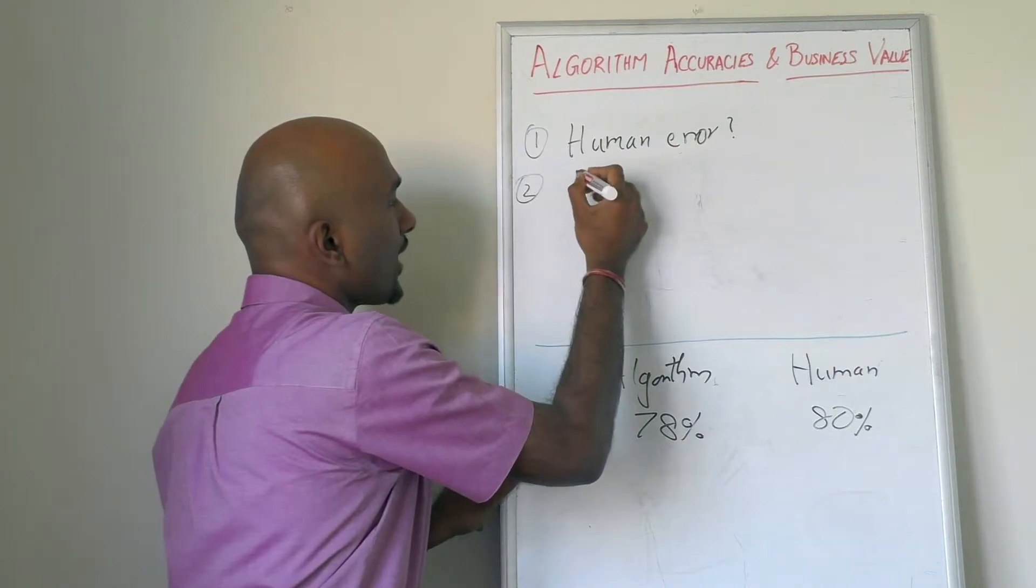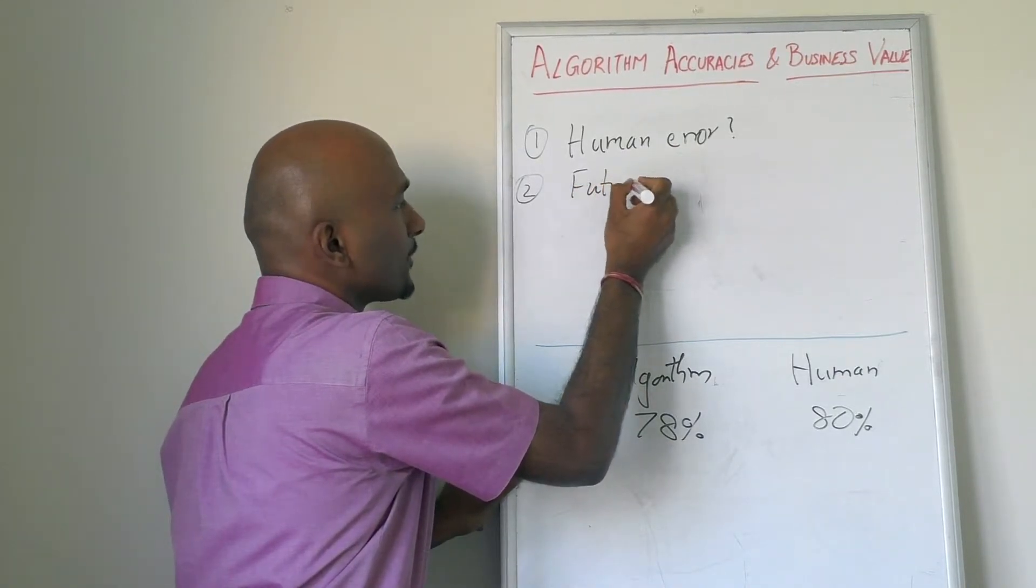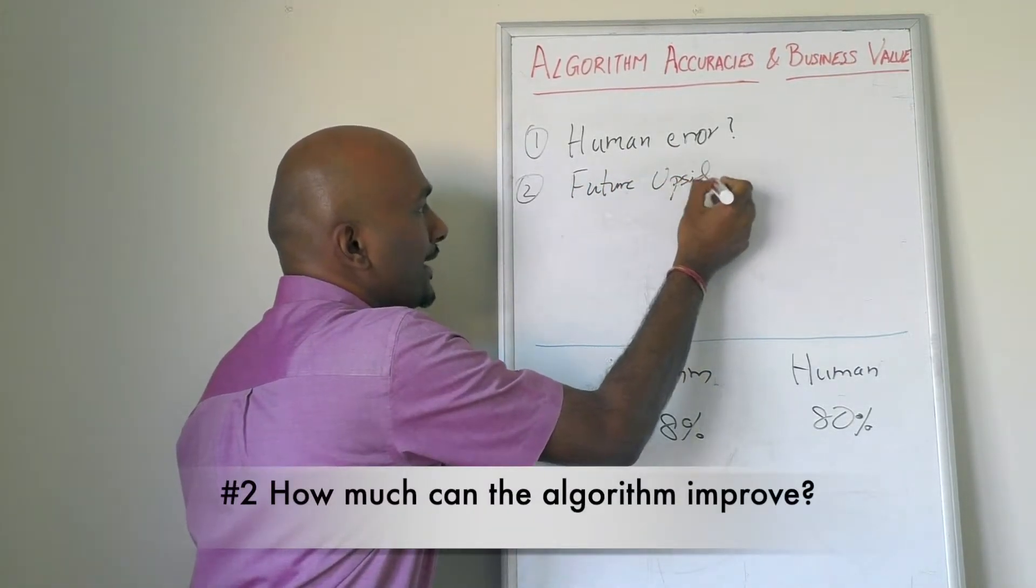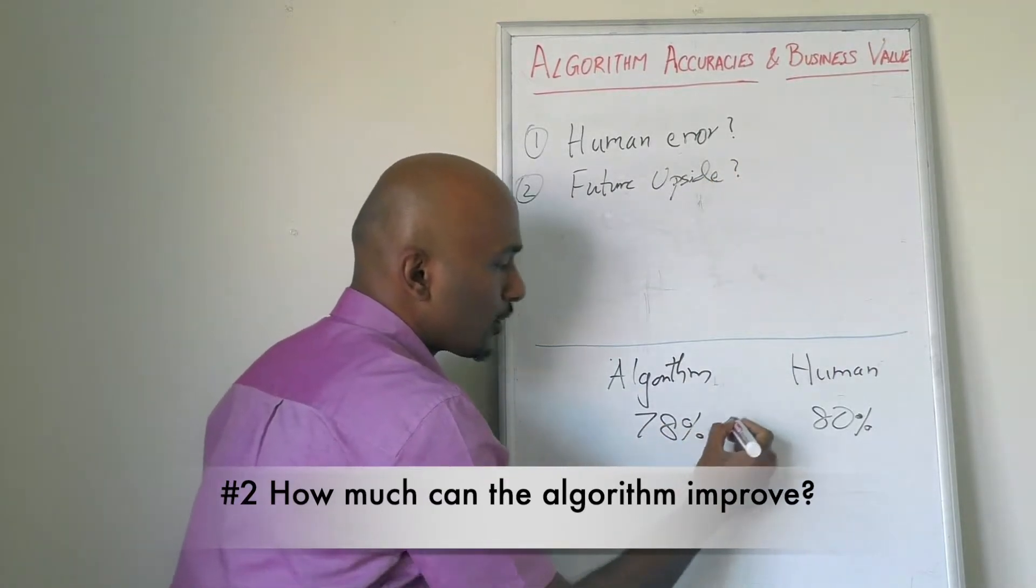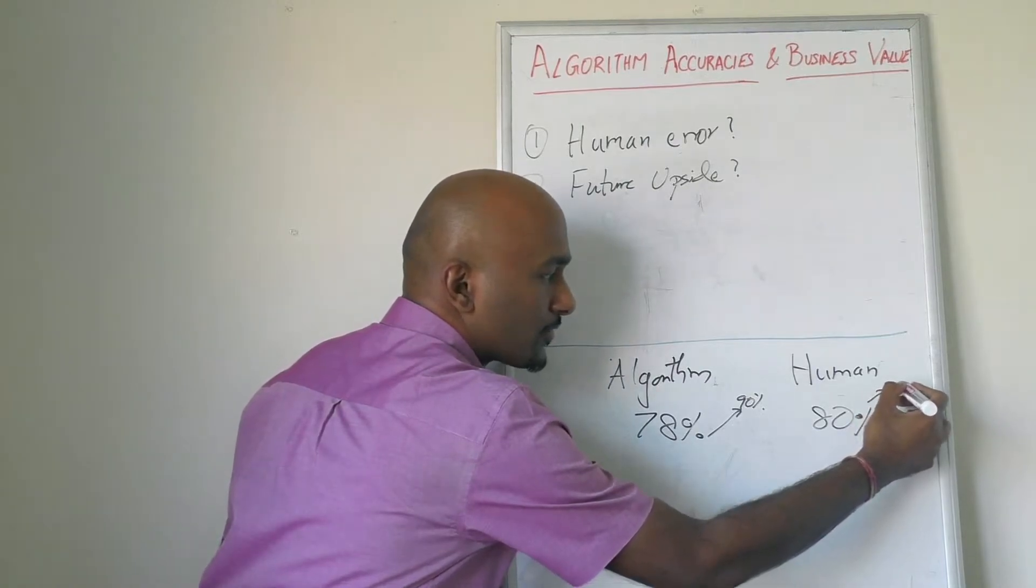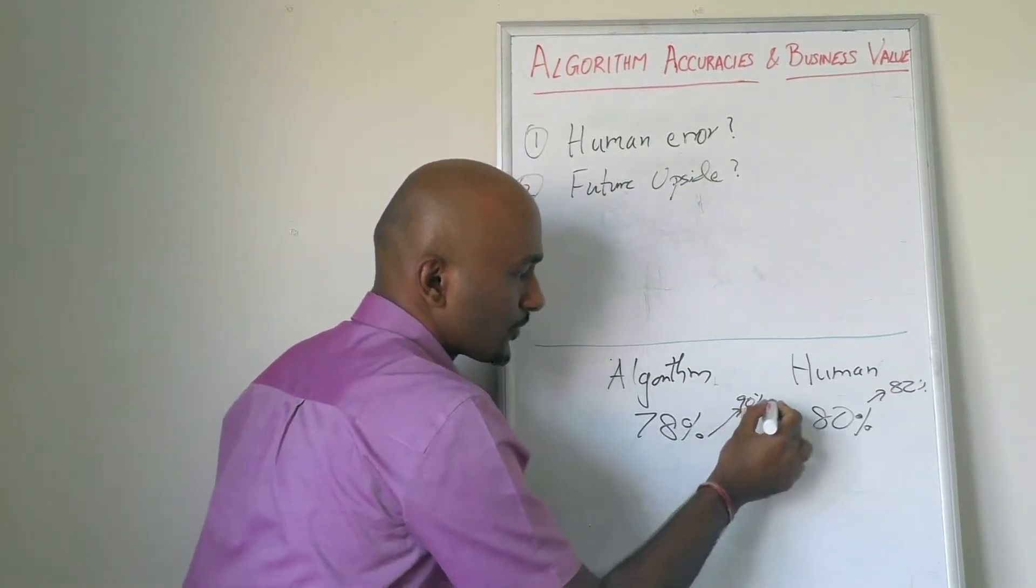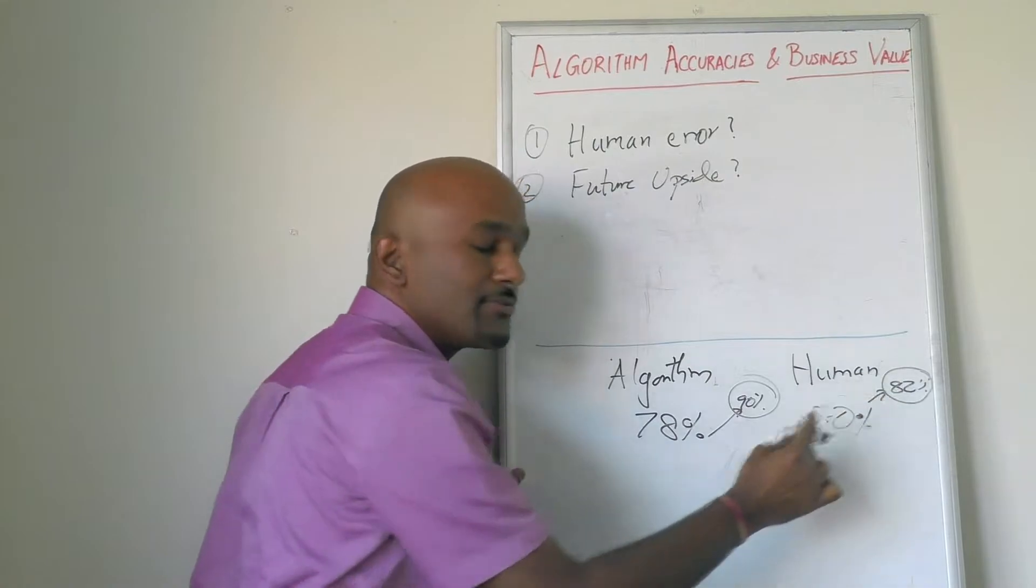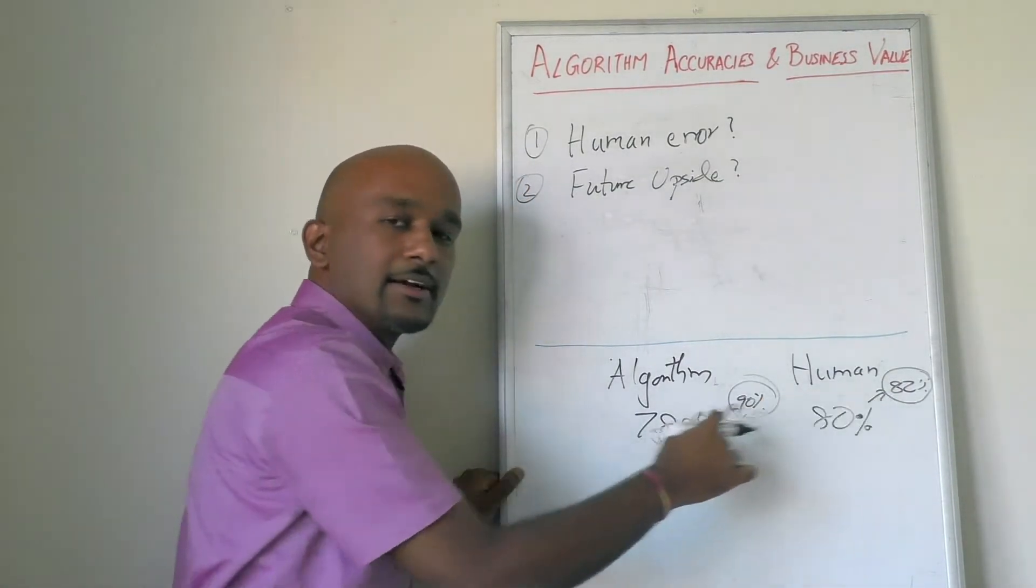The second question you should ask is, what is the future upside? Can the model get any better? Can it go up to 90% in a year? Maybe it can. Whereas humans with some upskilling, you will get them to 82%. So now the comparison is 90 versus 82. You start getting a clearer picture.